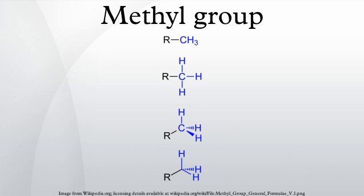While the methyl group is usually part of a larger molecule, it can be found on its own in either of three forms: anion, cation, or radical. The anion has eight valence electrons, the radical seven, and the cation six. All three forms are highly reactive and rarely observed.